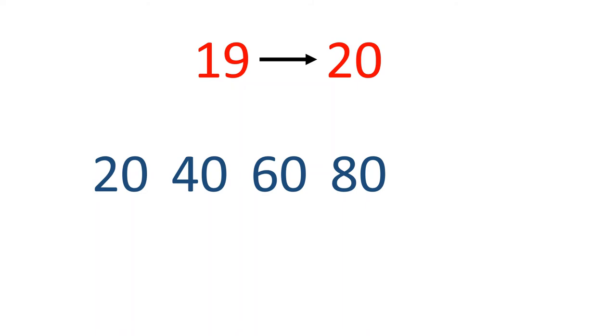So for each time I counted by 20, I need to subtract 1 for the actual answer. We counted by 20s 4 times, so we can take 4 away from 80 to find the actual answer. 19 times 4 equals 76.